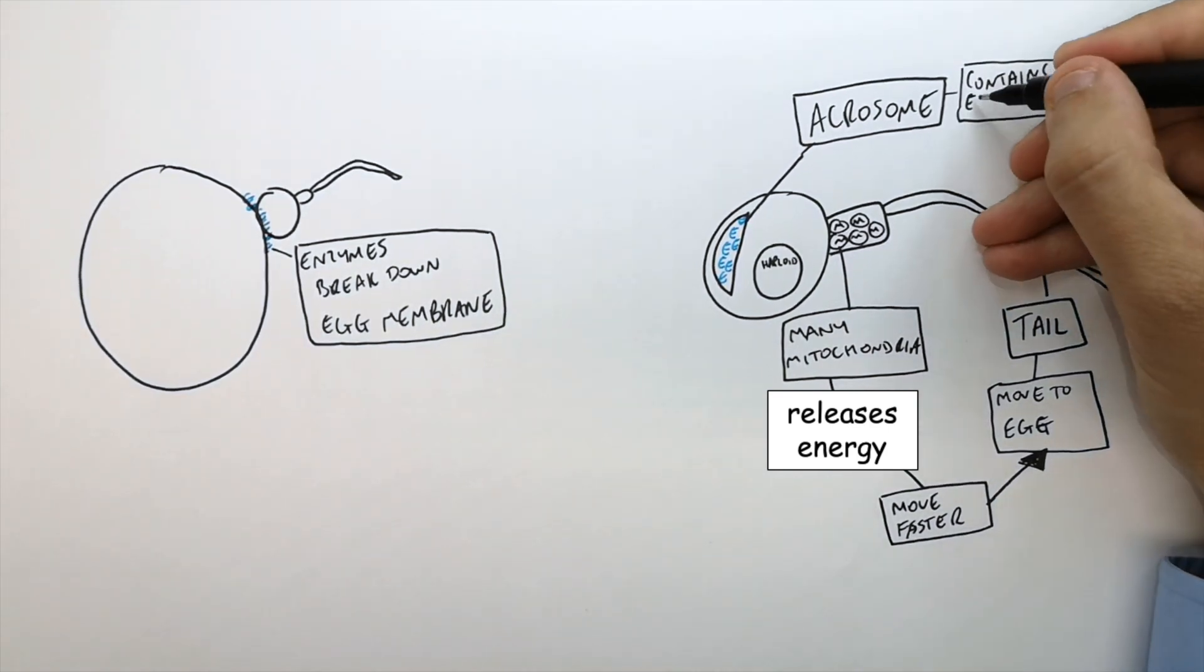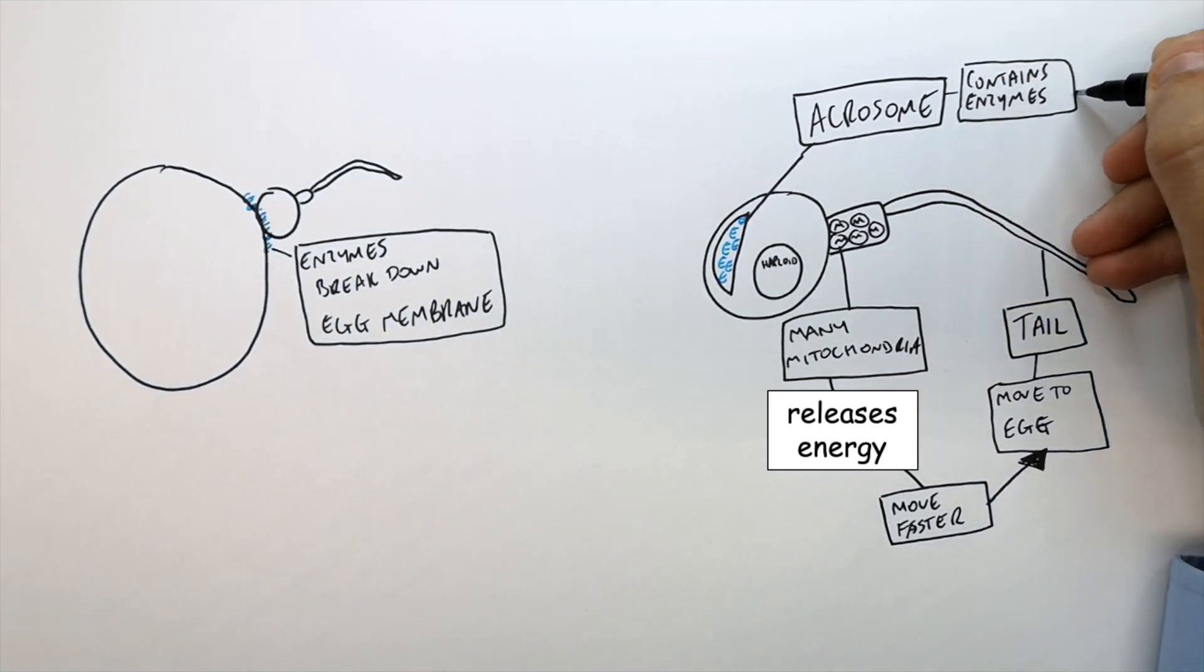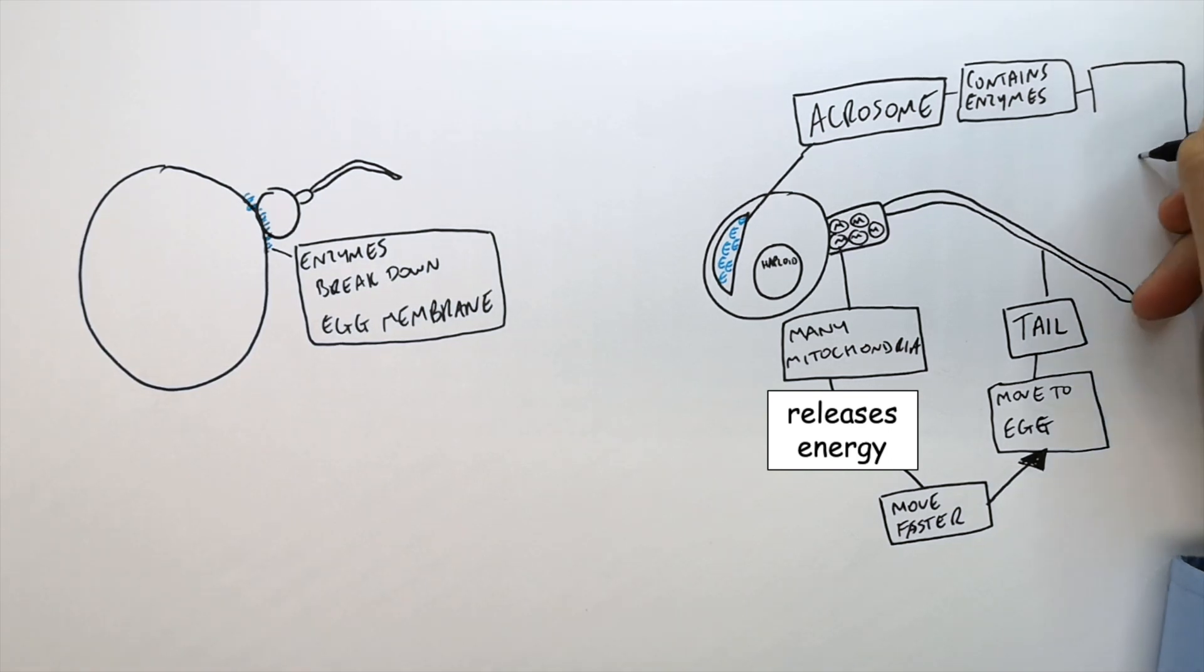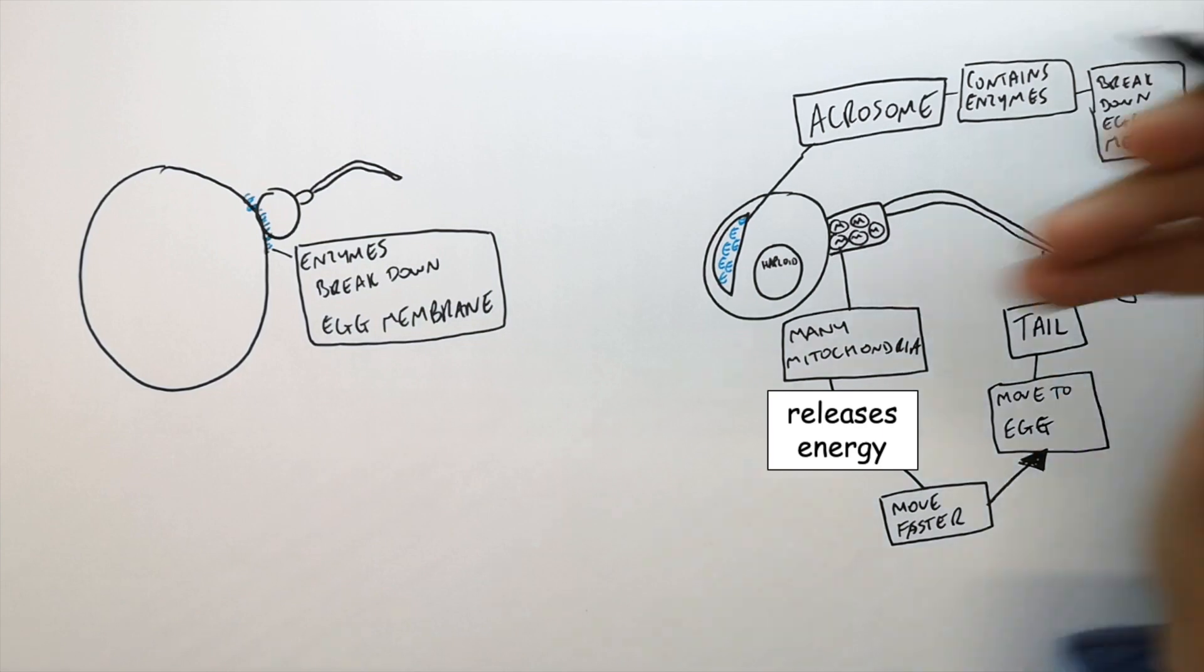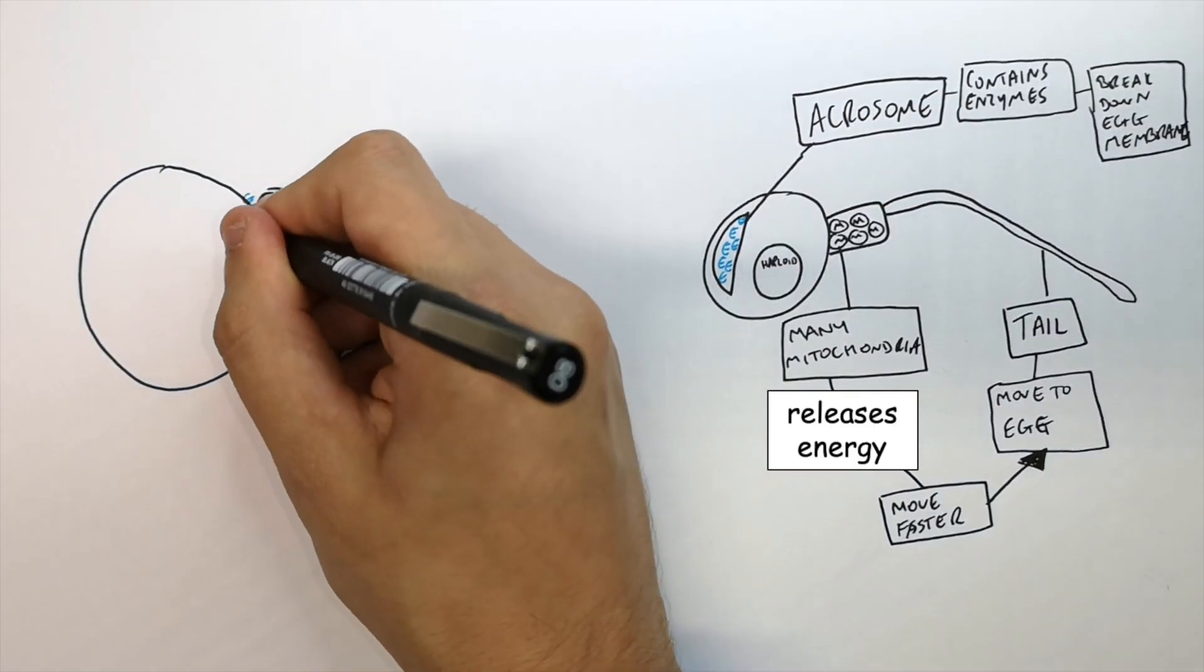These enzymes in the acrosome of the head of the sperm help break down a part of the cell membrane so that it can enter the egg. Now the sperm can enter the egg, and only one sperm can enter the egg to fertilize it.